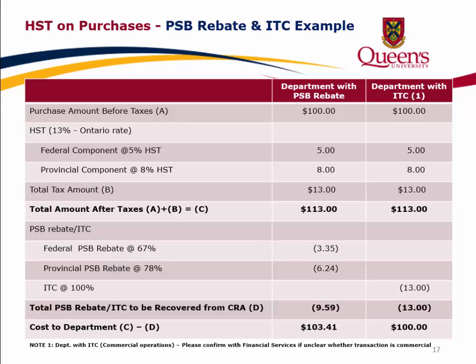This slide shows the PSB rebate and ITC example. Column 1 shows a department with PSB rebate, where the purchase amount before taxes is $100. The federal component at 5% HST is $5, and the provincial component at 8% is $8, for a total tax amount of $13 and a total after taxes of $113. The PSB rebate is broken into a federal component at 67% ($3.35 credit) and a provincial component at 78% ($6.24 credit), for a total PSB rebate of $9.59. Total cost to the department is $103.41.